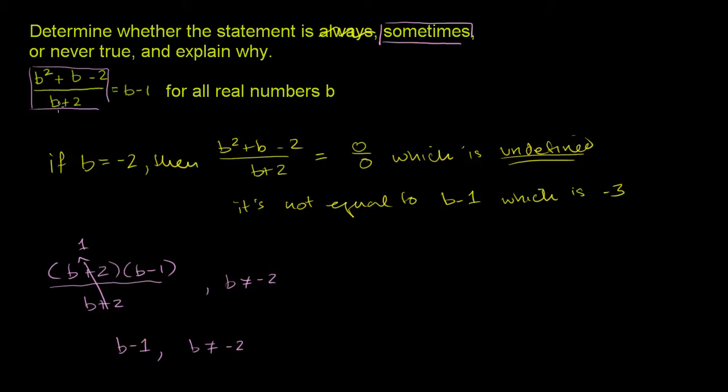You can even try it with some number here. Try it with 0. If I were to do 0 squared plus 0 minus 2, you get negative 2 over 0 plus 2 is 2. And then that does indeed equal negative 1. So it works with 0, it works with 1, it works with any number other than b is equal to negative 2.